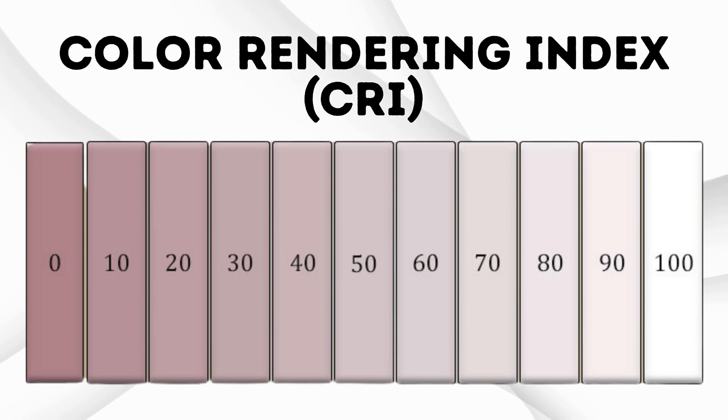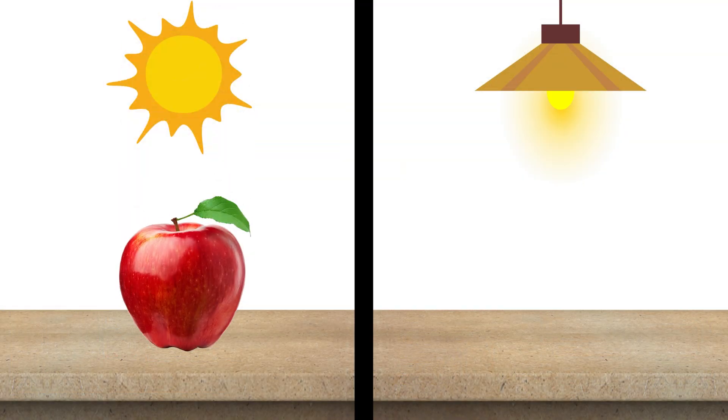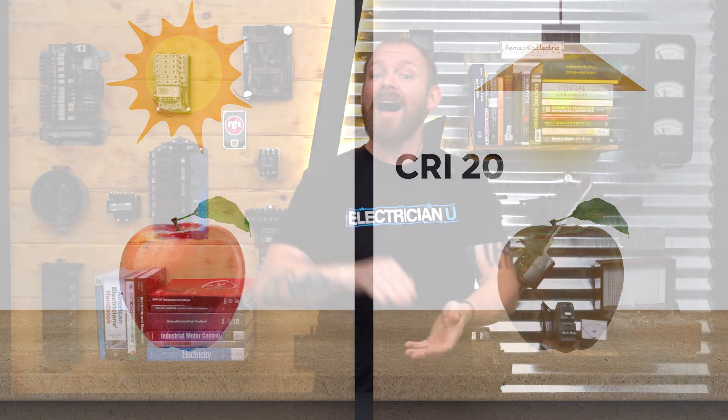So what is CRI? The Color Rendering Index goes from 0 to 100 and measures how well a light source can render the true colors of an object, similar to what the sun does outdoors. If you hold a red apple outside and bring it into a room with a low CRI, it might appear orange. But with a high CRI — like 90 — that same apple will look exactly the same indoors as it did outside.